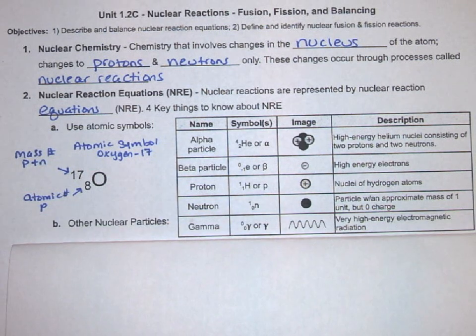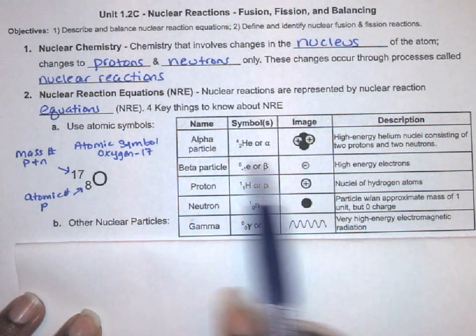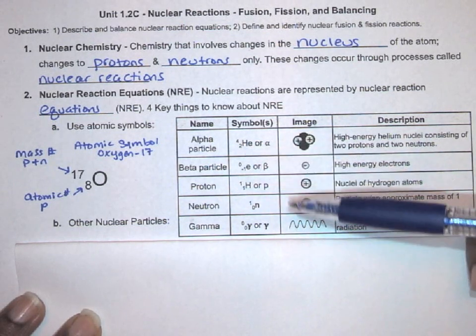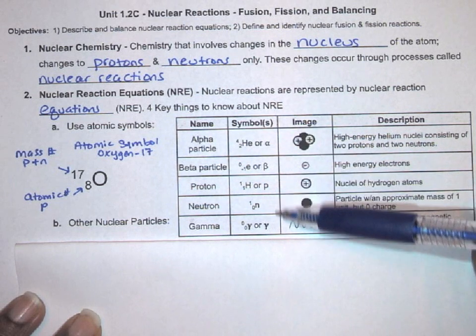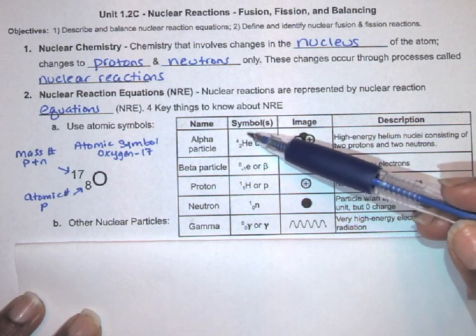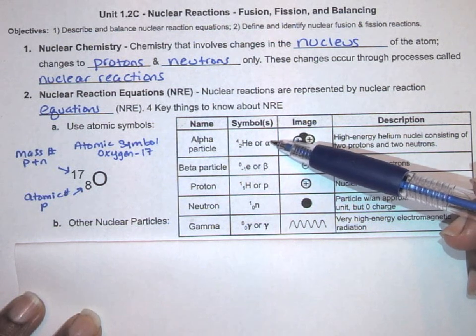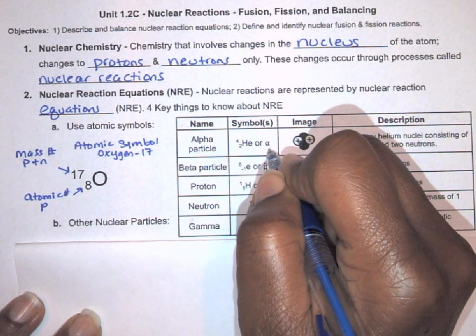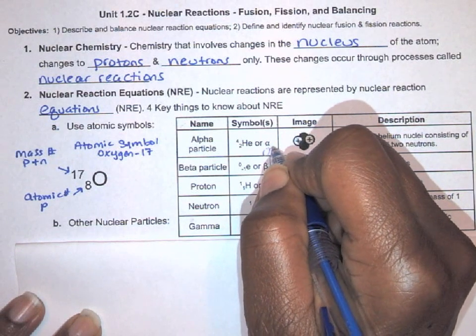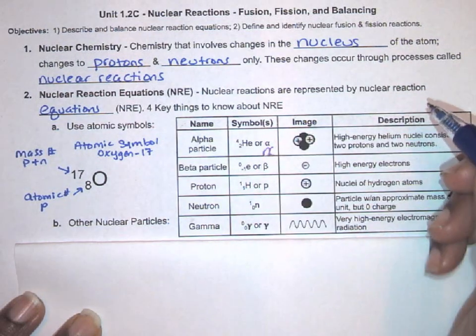In addition to atomic symbols, we also use other nuclear particles in a nuclear reaction equation. Here are some of the particles that you really need to know and get familiar with. First, an alpha particle. In this second column, I have the symbol for the alpha particle, which is either a helium-4 atomic symbol, because that's what an alpha particle is, or we use this Greek letter alpha. The way you draw an alpha, it kind of looks like an A but you have an extra loop. So it's like an A with an extra loop.